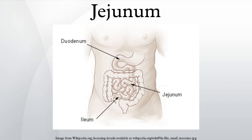Structure: The luminal surface of the geodunum is covered in finger-like projections of mucosa called villi, which increase the surface area of tissue available to absorb nutrients from ingested foodstuffs. The epithelial cells which line these villi have micro-villi.